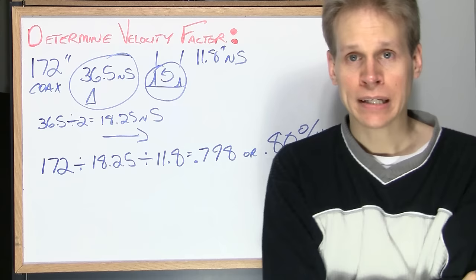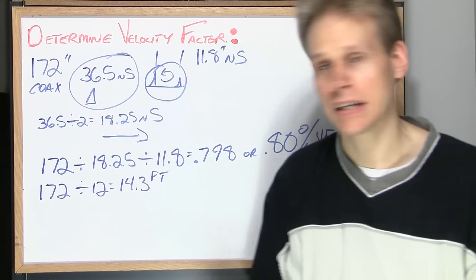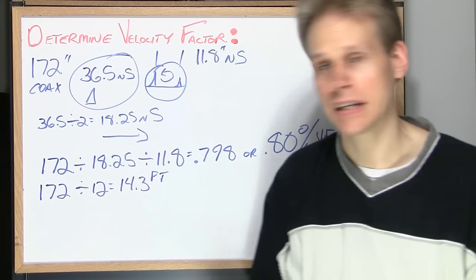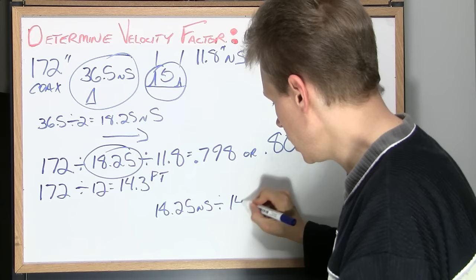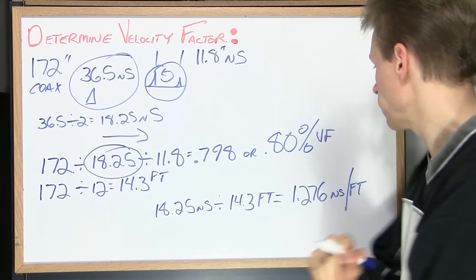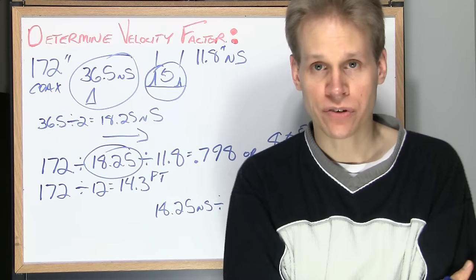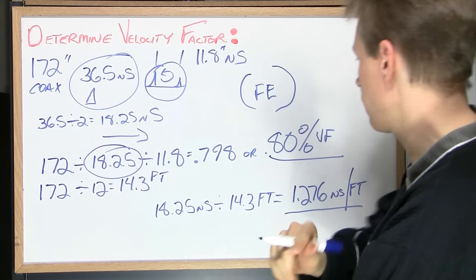Now a lot of manufacturers' data sheets include the nanoseconds per foot. We can simply calculate that by taking 172 dividing that by 12 which equals 14.3 feet of coax that we have. All we've done is simply taken the inches and converted it to feet here. So now we take this 18.25 nanoseconds and divide that by 14.3 feet which equals 1.276 nanoseconds per foot. Now if we look at the manufacturer's data sheets we'll find that these two figures here and here come very close to foam polyethylene type dielectric or FE for short. And that's just how simple it is to determine your velocity factor with a TDR and a measuring tape.